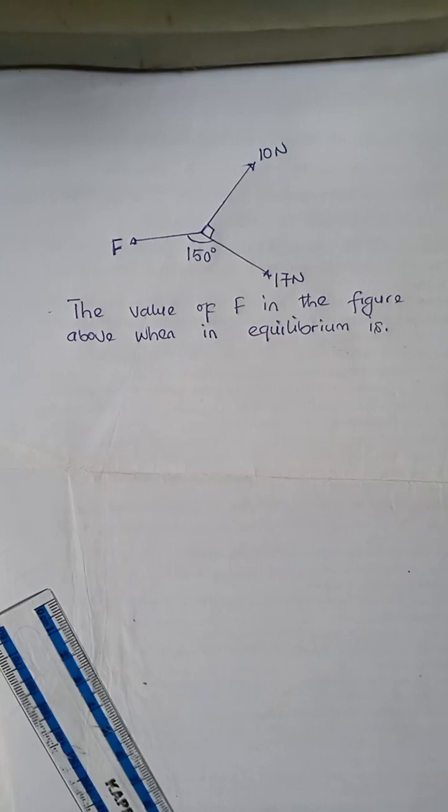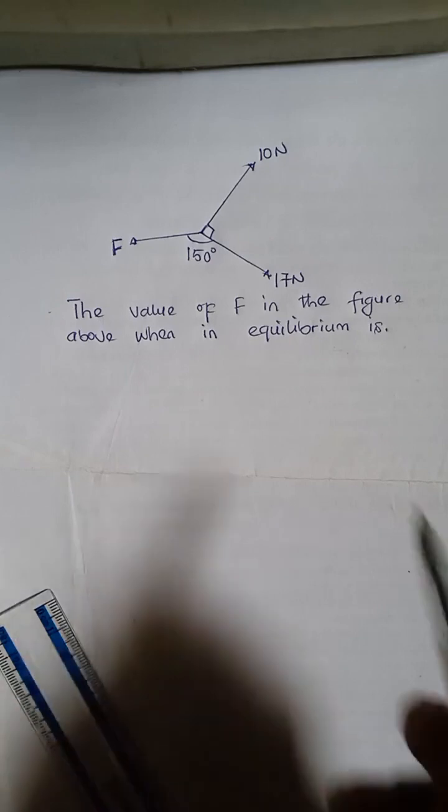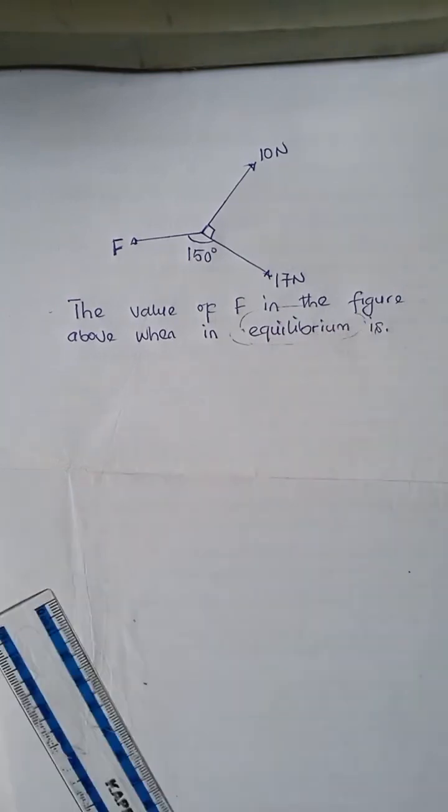This question said the system is in equilibrium. Understanding that is key to solving this question because there are two parts of mechanics. Any topic in physics that relates to motion or the influence of forces on bodies which may or may not cause motion is under the branch called mechanics. Mechanics has two parts: dynamics and statics. This particular question because of the word equilibrium means that it's under statics. Statics means there is zero motion, something is at rest.